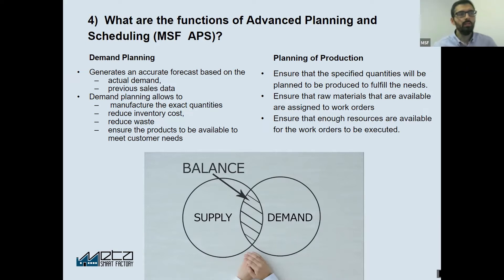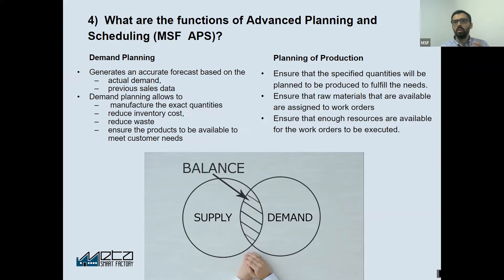The second function is the planning of production. APS can plan the processes to carry out various activities. The system makes sure that it checks that you have the raw materials available so that it can assign them to work orders, using reservations to assign these to work orders.